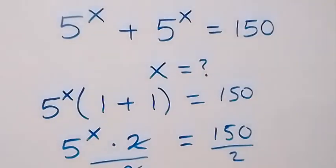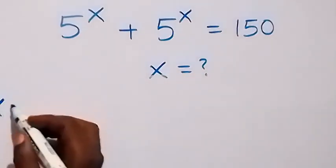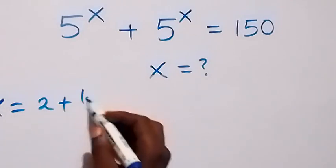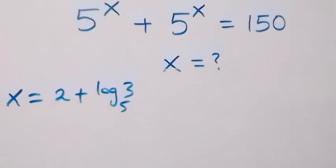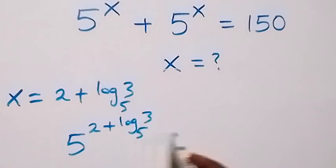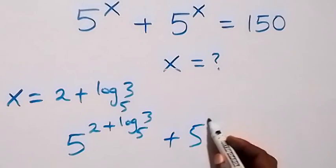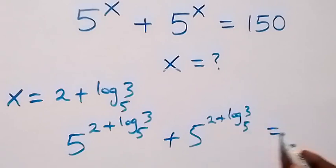Now let's check what we have, to see if this satisfies the original equation. Let's substitute the value x equals to 2 plus log 3 base 5. When x is this, it implies that we have 5 raised to power (2 plus log 3 base 5) plus 5 raised to power (2 plus log 3 base 5), which equals to 150. That means we have 2 times 5 raised to power (2 plus log 3 base 5) equals 150.